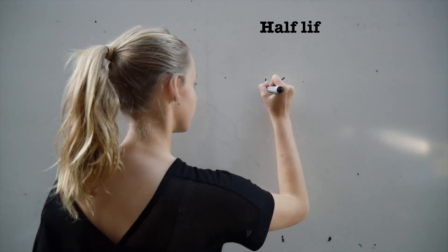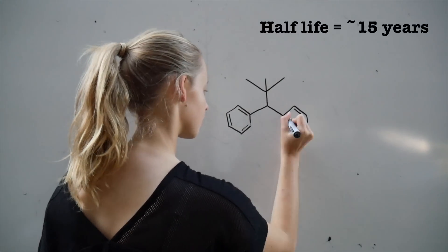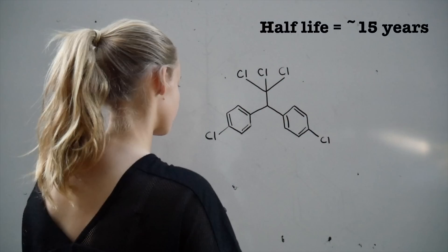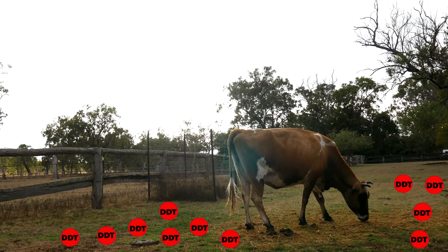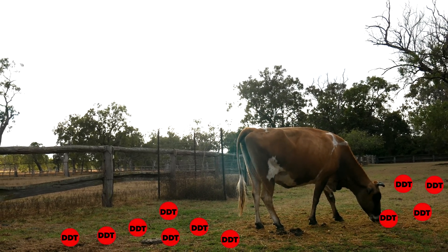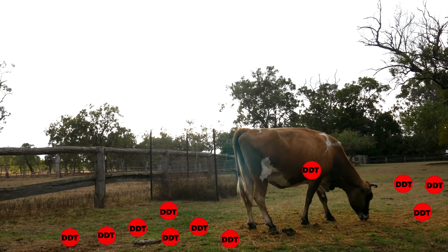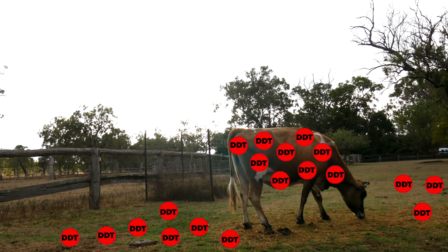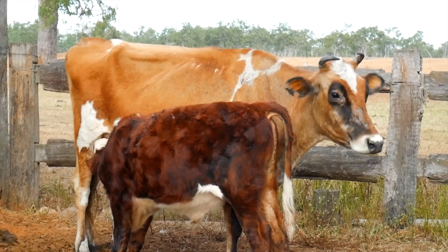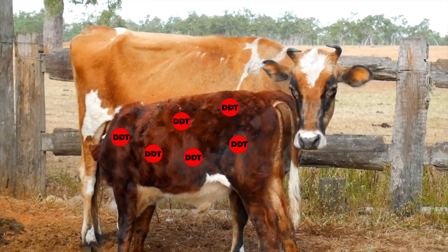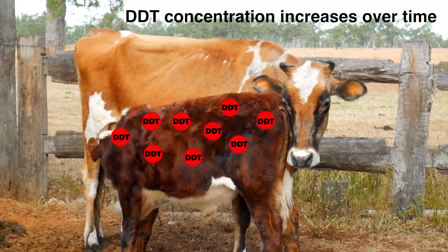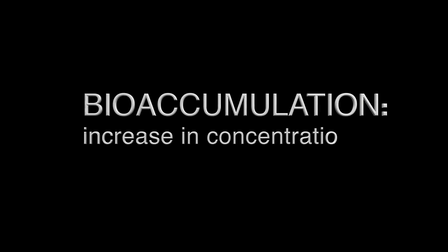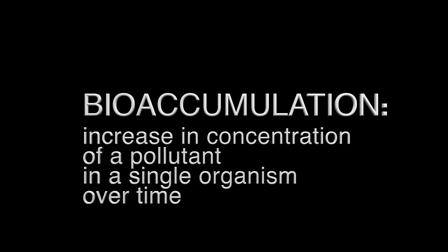With a half-life of around 15 years, DDT remains very persistent in the environment. With the presence of this pesticide in soils and pastures, DDT was consumed by cattle. As DDT is highly fat-soluble, the compound accumulated in the cattle's fatty tissues. As the cattle consumed more and more of the DDT-contaminated pastures, the concentration of the pollutant in the cattle increased over time. This accumulative process in the cattle is known as bioaccumulation.